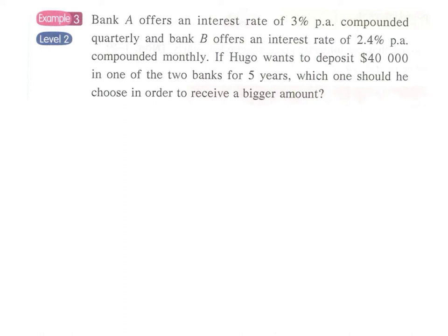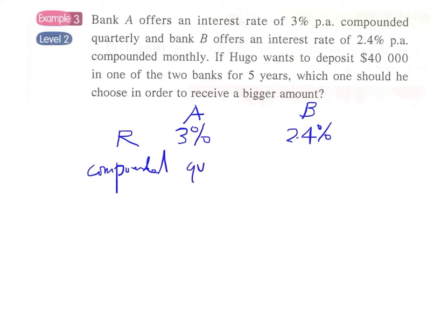We can write down the interest rate for Bank A and Bank B. For Bank A we have 3% per annum; for Bank B we have 2.4% per annum. However, the time for calculating compound interest is different. Bank A is compounded quarterly — that means four times per year — and Bank B is compounded monthly, that is 12 times in a year. So we have to readjust the interest rate.